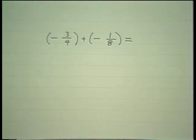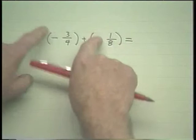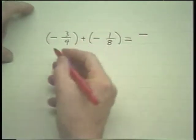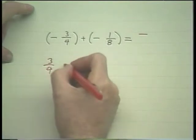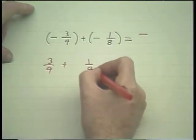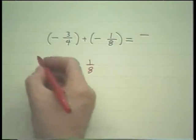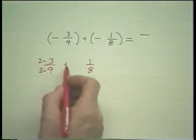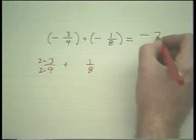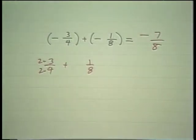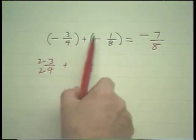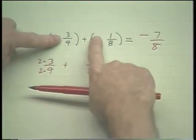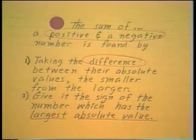If we have fractions, the rule does not change. If adding two negatives, the answer is still negative. And now we simply add their absolute values, which is 3/4 plus 1/8. Getting a common denominator, I have 6/8 plus 1/8, which is 7/8. So again, when adding two negatives, the answer is negative — simply add their absolute values.